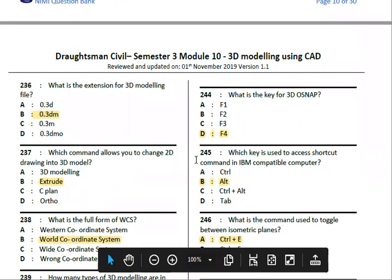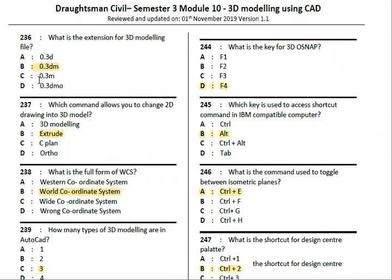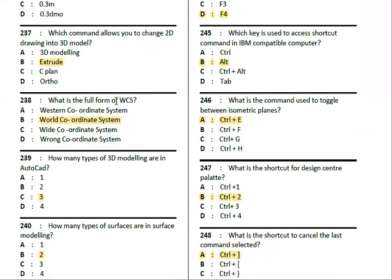Next, 3D modeling questions. What is the file extension for a 3D modeling file? The extension is .3dm. Next, which command allows you to change 2D to 3D? The command is Extrude. Next, what is the full form of UCS? It stands for User Coordinate System.